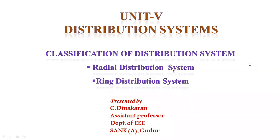The distribution system consists of three components: feeder, distributor, and service main. A feeder is the conductor which connects the substation to the area surrounding that particular substation. Generally, in the feeder, no tappings are connected — it is directly connected from the substation to the consumer premises. Feeders are used for industrial consumers, particularly large-scale industry. Directly, the connection is taken from the substation to the consumer premises — that is, directly into the industries.